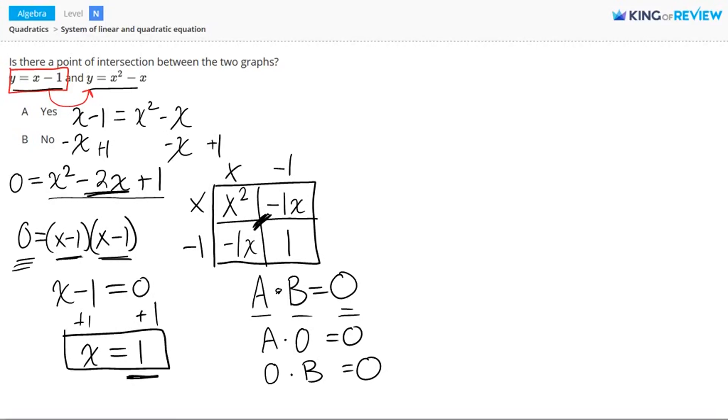So I'm going to choose the first equation. y equals x minus 1, and when I plug in a 1 for x, I have f of 1 equals 1 minus 1, which is zero. So I have a point of intersection at 1, zero.